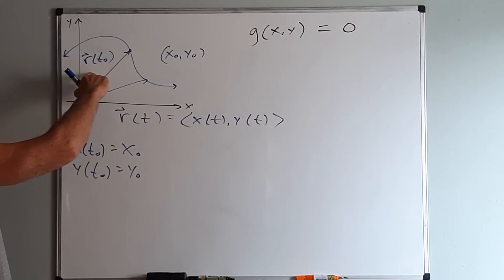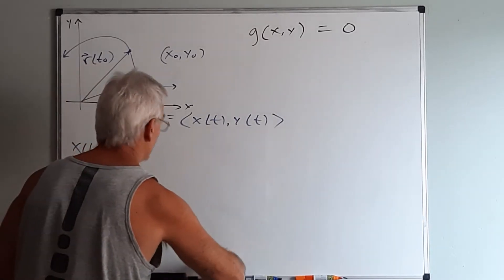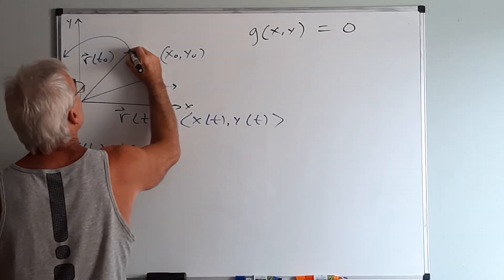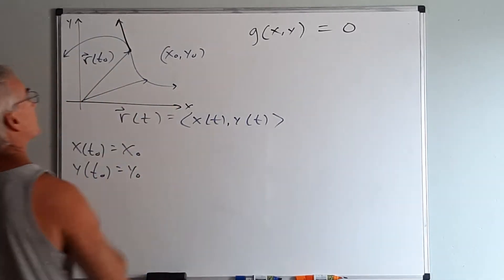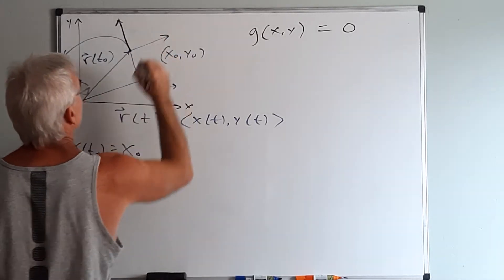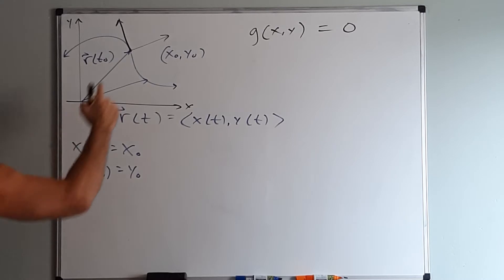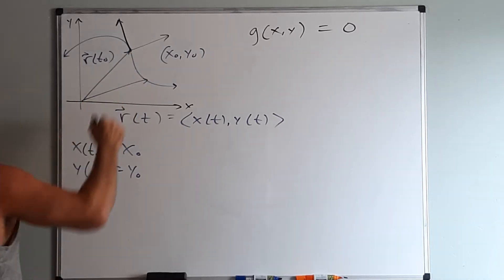Then I can define my position vector using only one value. Now let's consider the tangent direction which would be there, and then the orthogonal, the normal direction. We want to show that this actually is in the direction of the gradient vector.